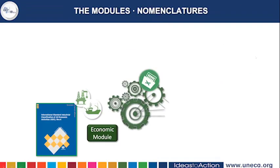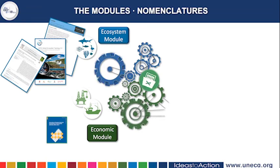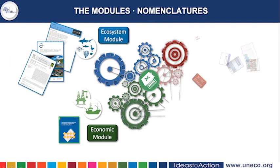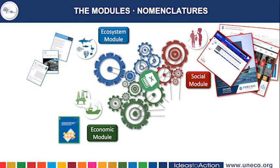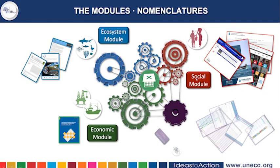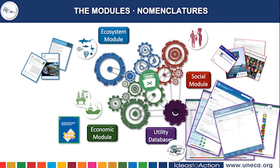In terms of classification systems: the economic module is based on the International Standard of Industrial Classification of All Economic Activities, or ISIC, revision four. The ecosystem module relies on two nomenclatures — the IUCN Ecosystem Typology version two and CICES version 5.1 for ecosystem services. The social module is based on indicators drawn from sources including Stable Seas, the UN, and the World Bank. The database also contains information on exchange rates, deflators to calibrate data from different years, and country-level information.